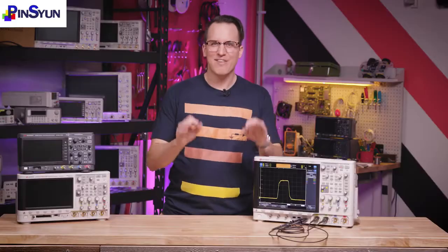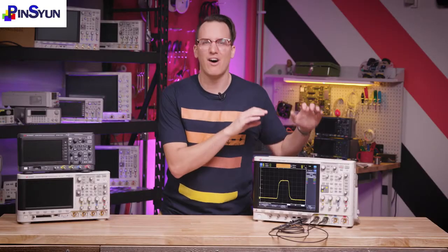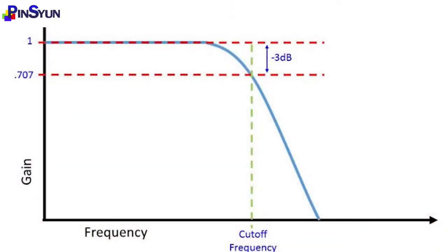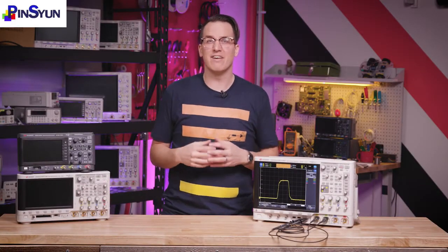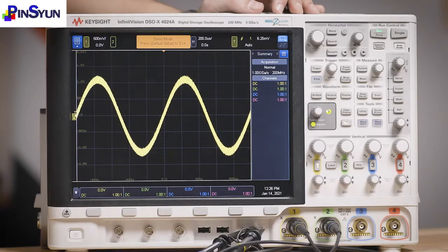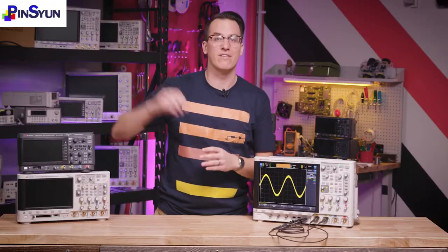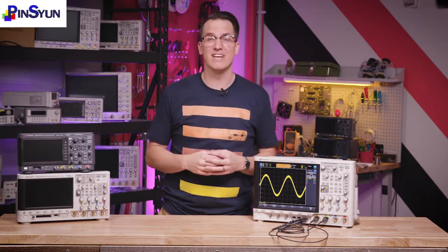Now we know how to get the signal we want on screen, how to make measurements, and a lot about triggering. Sometimes this still won't be enough. By default, oscilloscopes show you all signal frequencies from DC up to the bandwidth of the scope. Bandwidth is an oscilloscope's key banner specification — the higher the bandwidth, the higher the price. Maybe you don't need all that bandwidth. On each channel, you can turn on a 20 MHz low-pass filter to get rid of extra high-frequency junk. Noise is proportional to frequency, so removing higher frequencies is nice for measuring things like power, where that noise just gets in the way of your actual data.